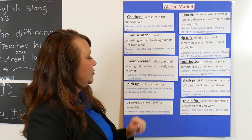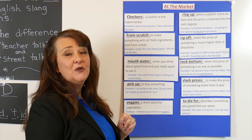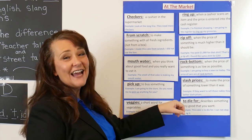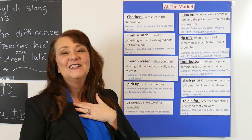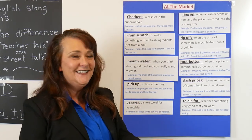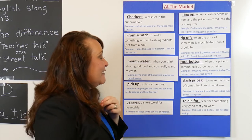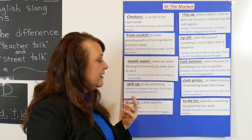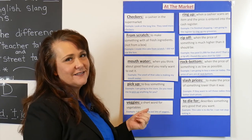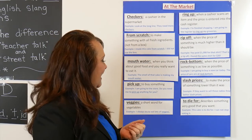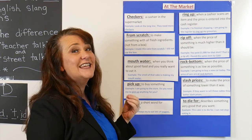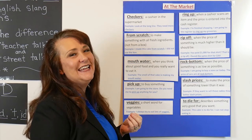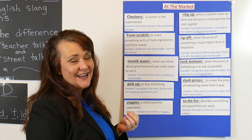The last group of words is 'to die for' — sounds scary, doesn't it? To die for means to describe something very good that you want. Example: 'This cake is to die for. I can't stop eating it.'